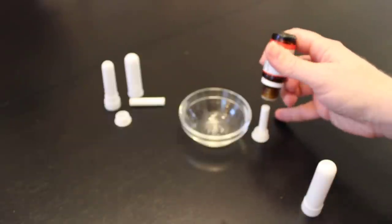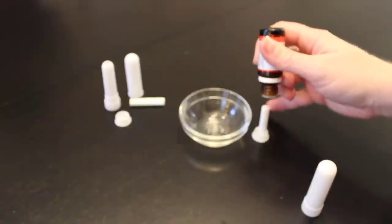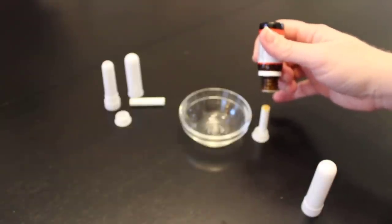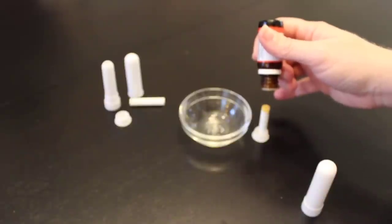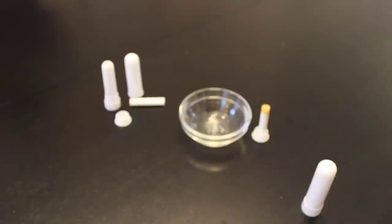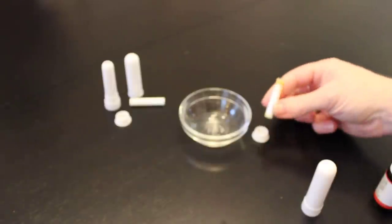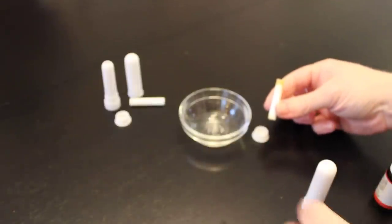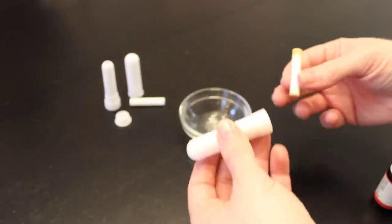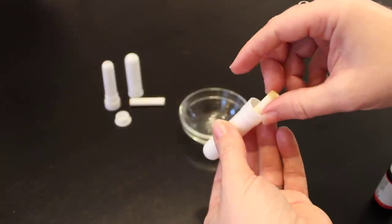So that was 10 drops, and you can see as it sits, it'll start to soak up the oil and it'll travel down the wick. You insert it into the bottom of the tube and then snap on the end.